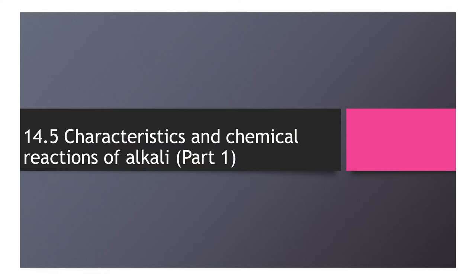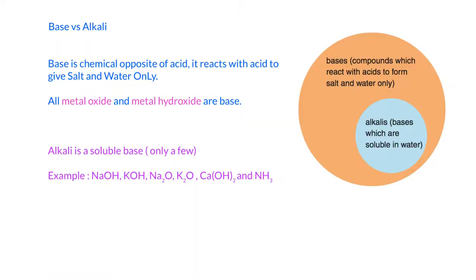Now we go to talk about the characteristics and reactions of alkaline. To start with, what is base and what is alkaline? Previously we said that base is the chemical opposite of acid and it will react with acid to give salt and water only. Base is an opposite of acid, and most of the time all the metal oxides and also metal hydroxides are bases.